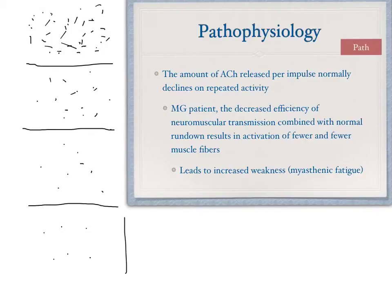So in addition to the underlying pathophysiology of myasthenia gravis, every time we try to fire in rapid succession, we have a reduced amount of acetylcholine available because it hasn't had a chance to reproduce and refill. This results in even further increased weakness in these patients.